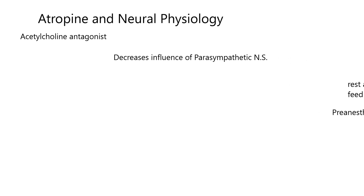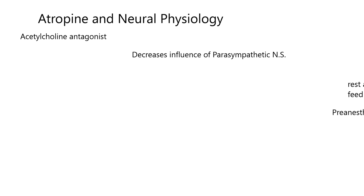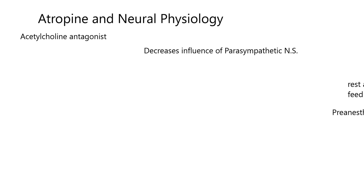Acetylcholine plays a part in the parasympathetic nervous system, so if you have something that works against that, it would decrease the influence of the parasympathetic nervous system in the dog, cat, horse — whatever mammal you want to talk about. Atropine shows us what happens when we turn down the influence of the parasympathetic nervous system.